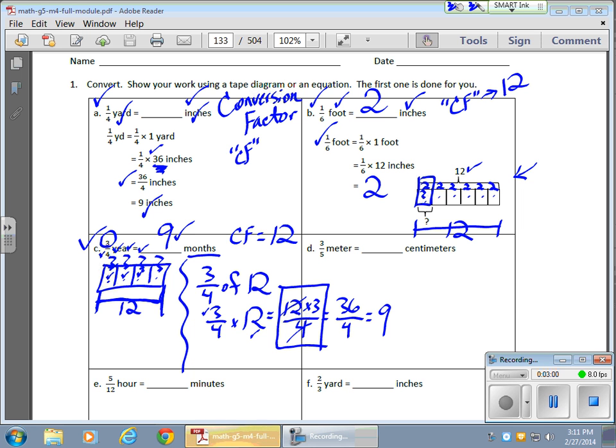4 divided by 4. 4 goes into 4 ones, and 4 goes into 12 three times. So 4 divided by 4, 1. 12 divided by 4, 3. 3 times 3 is 9. 9 over 1, which equals 9.